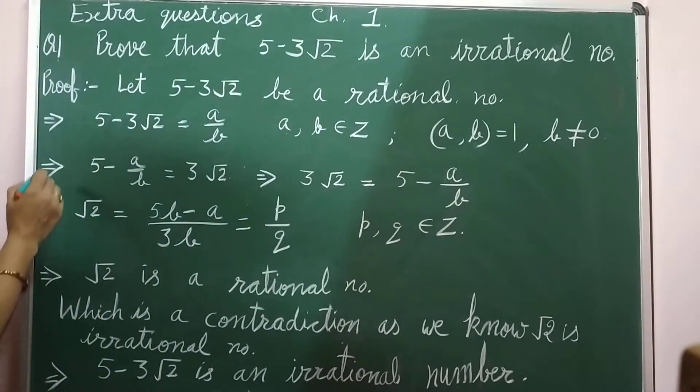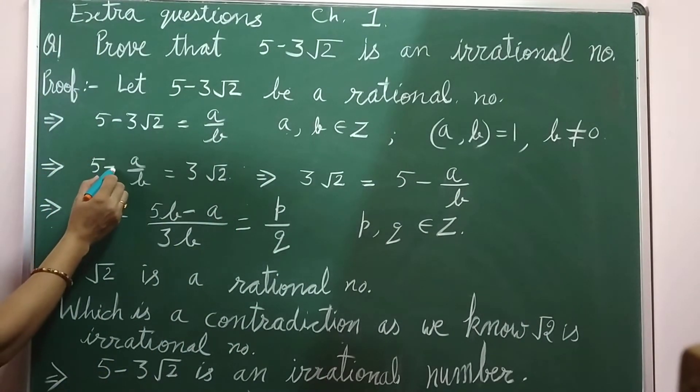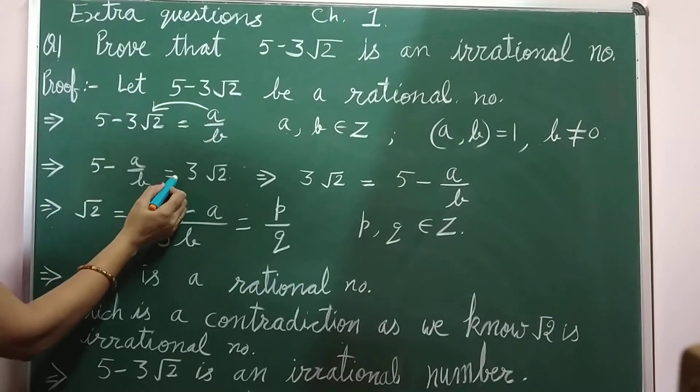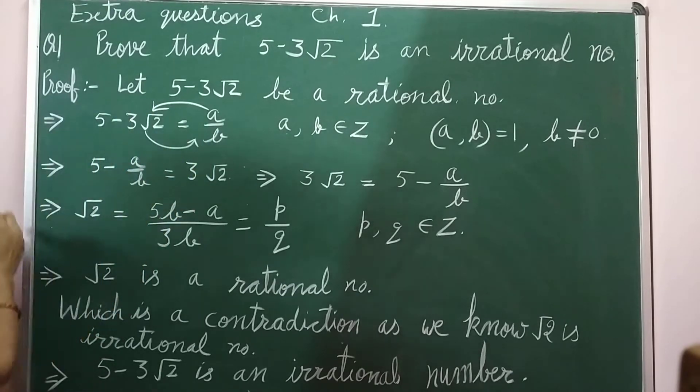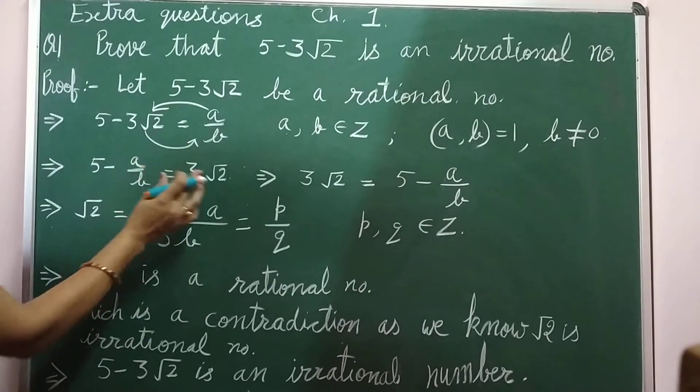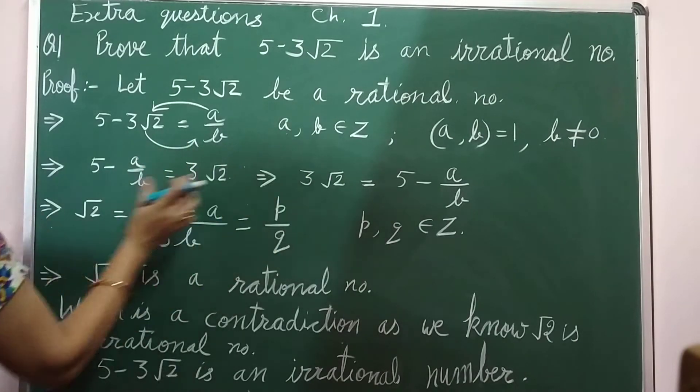Which implies 5 minus a over b. We take this term to the other side: 5 minus a over b is equal to, this term goes to the other side, 3 root 2.